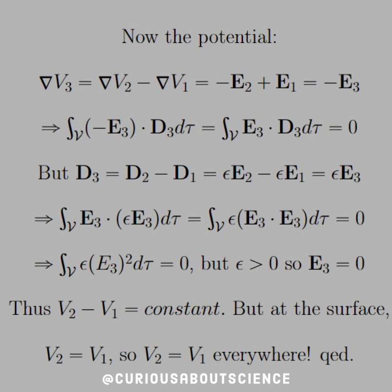So the difference E2 minus E1, or V2 minus V1, is a constant. But at the surface, we know that V2 equals V1, so that implies that V2 equals V1 everywhere.